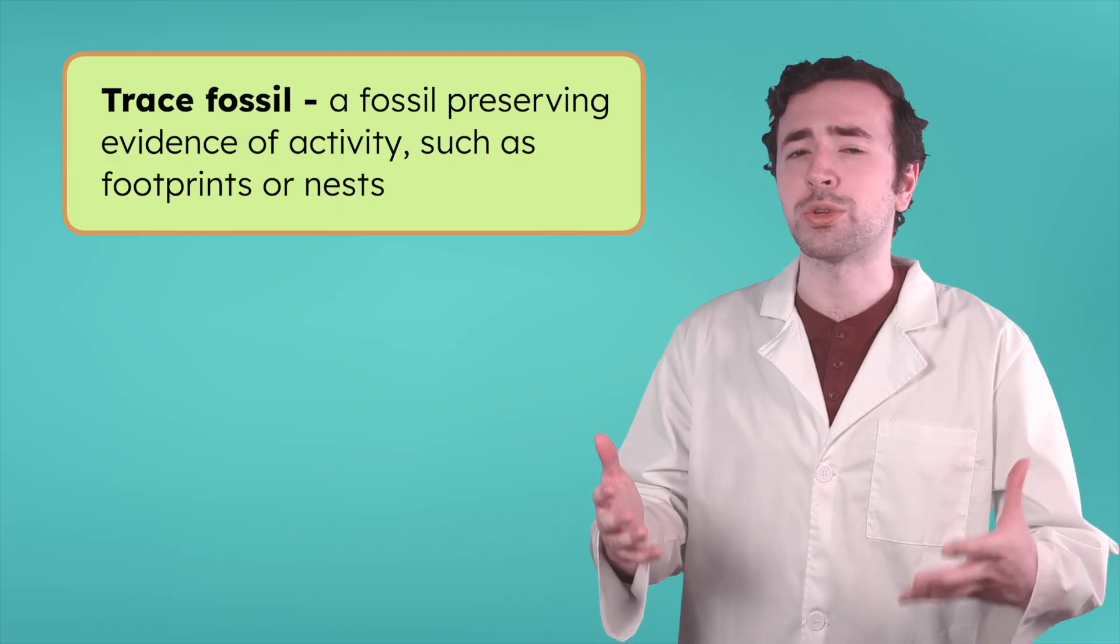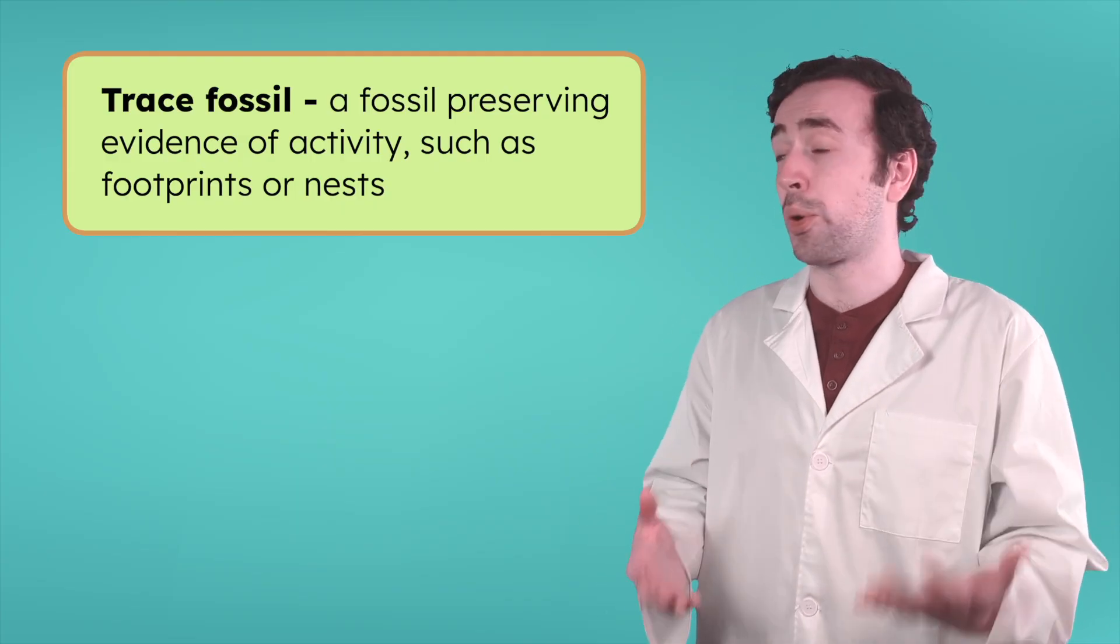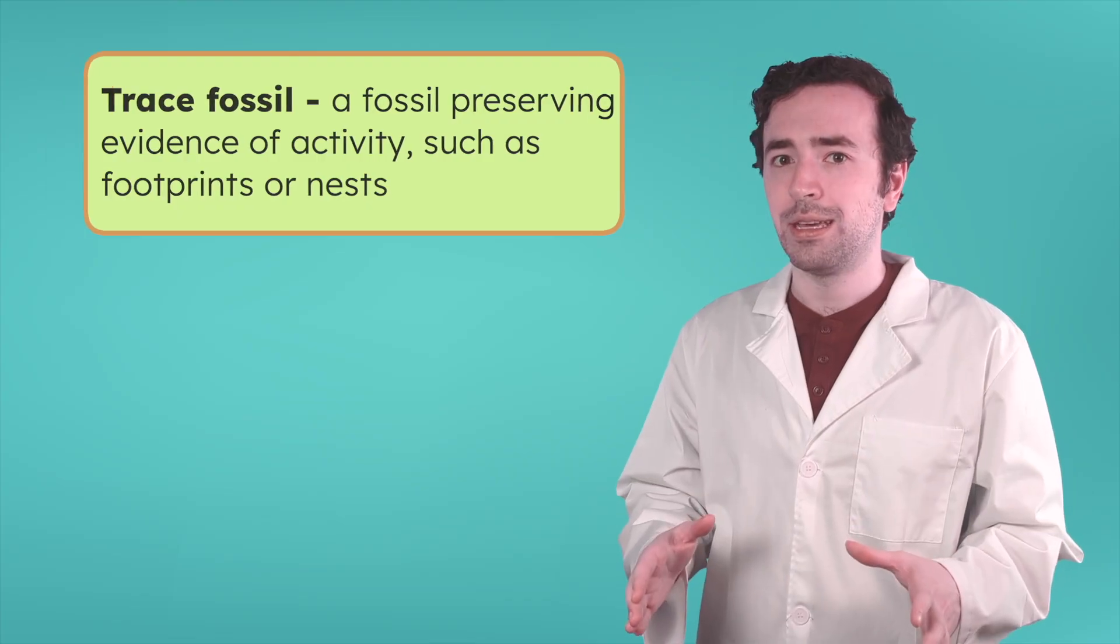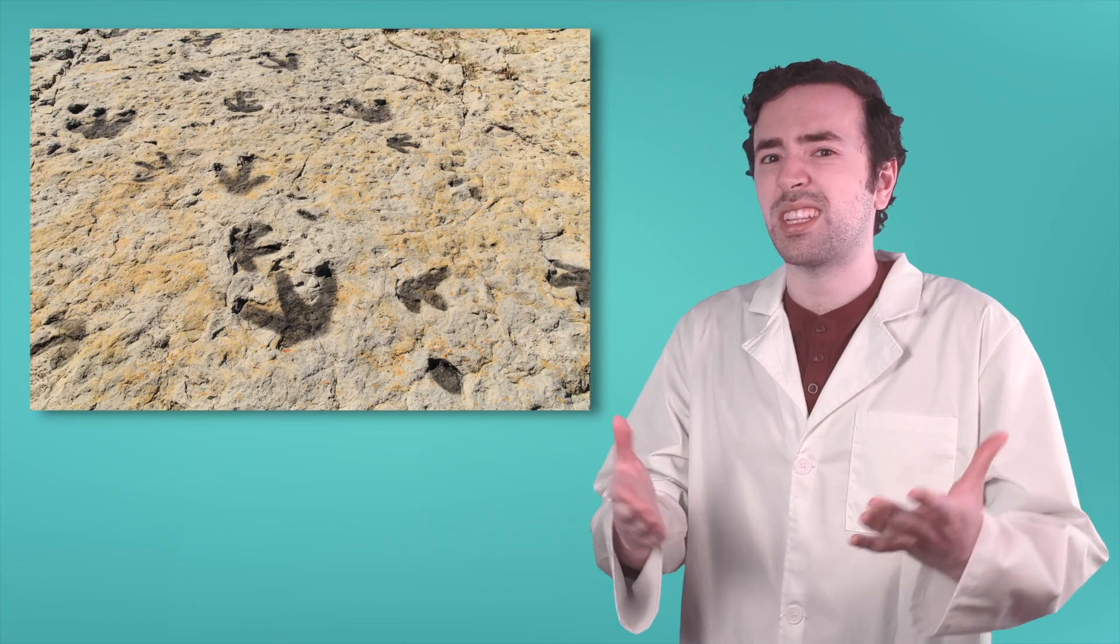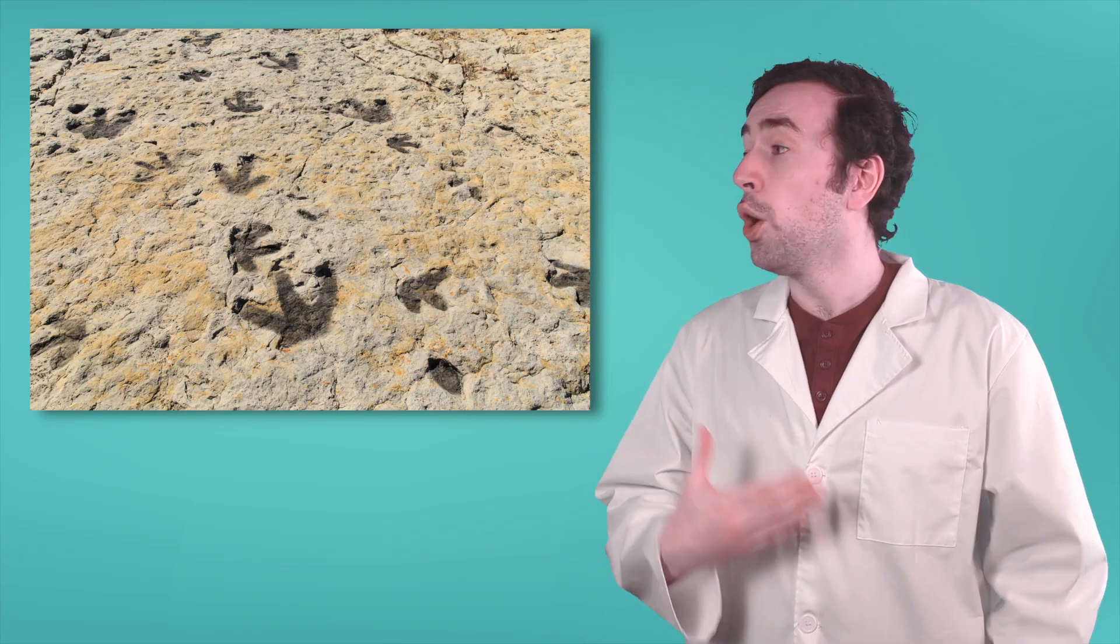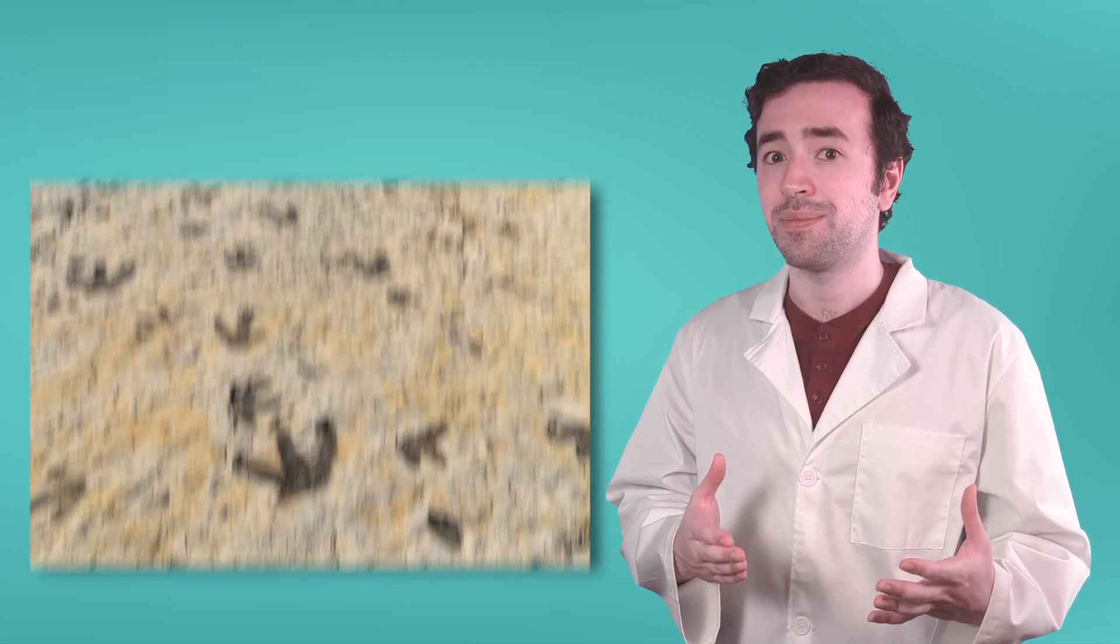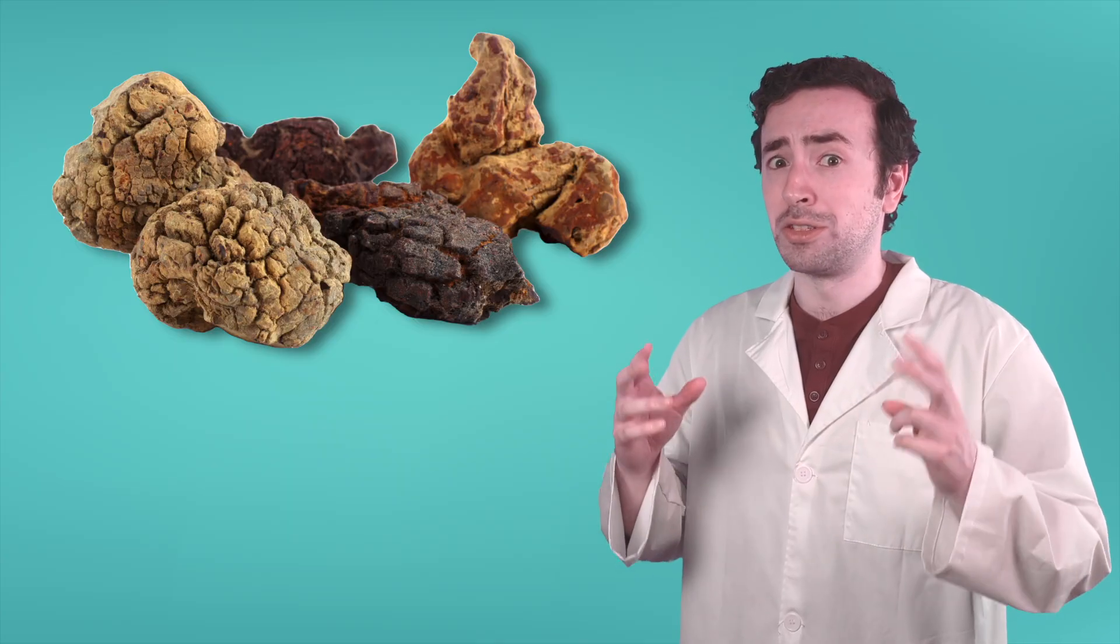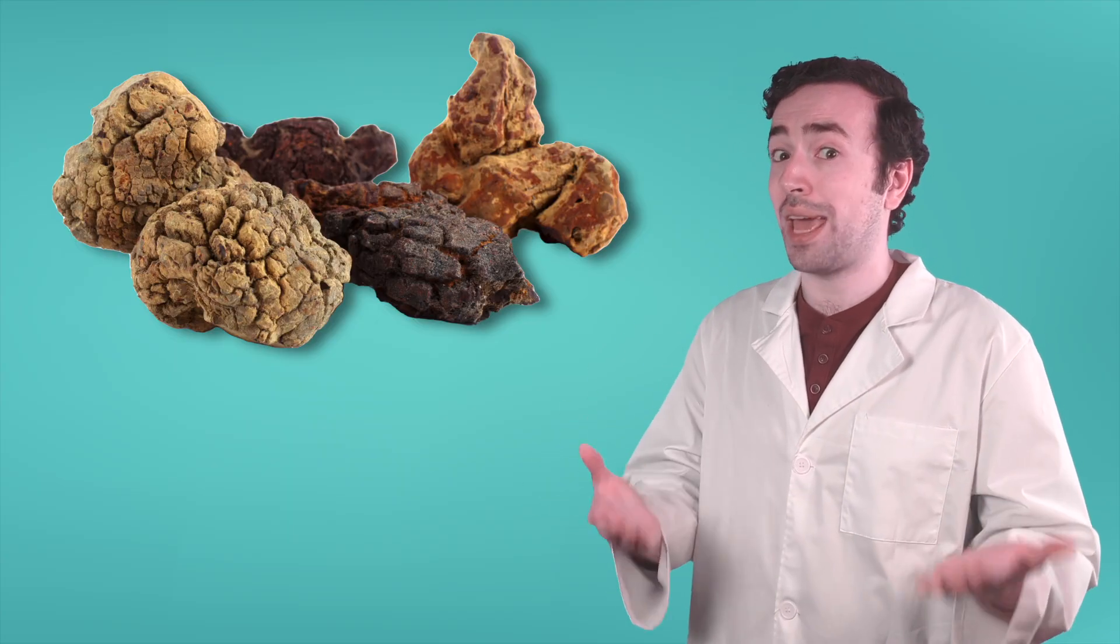Instead of bones or shells, trace fossils preserve things like footprints, burrows, and even nests. Trace fossils could teach us a lot about the living things from the past. Paleontologists have discovered tracks left behind by dinosaurs, showing how fast they ran, whether they traveled in groups, and even if they were hunting or being chased. Even coprolite can help scientists learn what prehistoric animals ate.